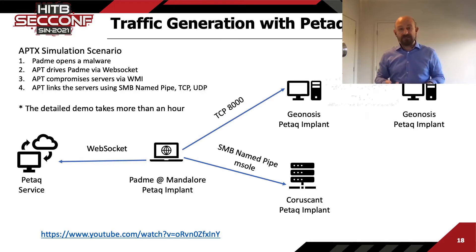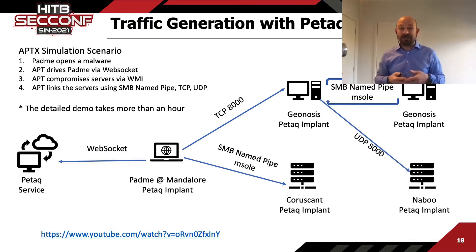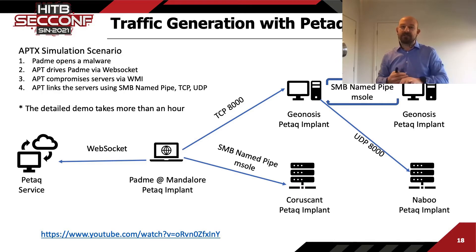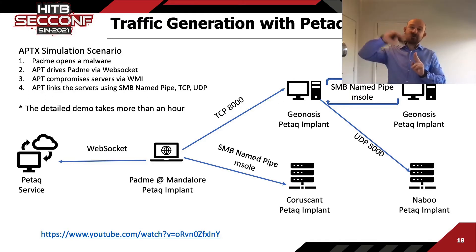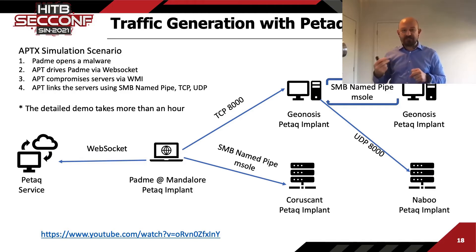The scenario takes over an hour. In Genesis, we fork another implant for advanced activities requiring additional connections. We sacrifice that implant if discovered — another implant remains on the same system as backup. We don't link them to the original implant to avoid losing connections or generating unnecessary traffic. We use SMB named pipe on the loopback within the same host. Naboo uses UDP — demonstrating SMB named pipe, TCP, and UDP across the scenario, because different network segments allow different protocols.